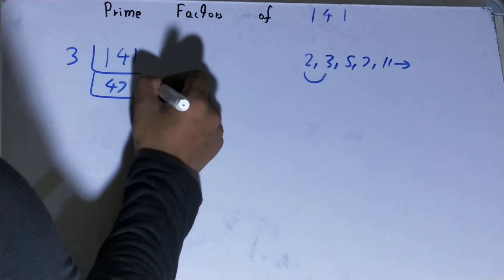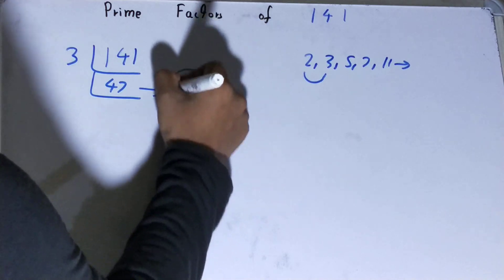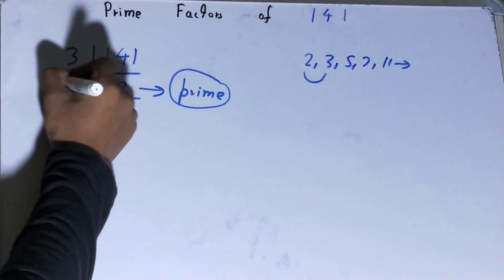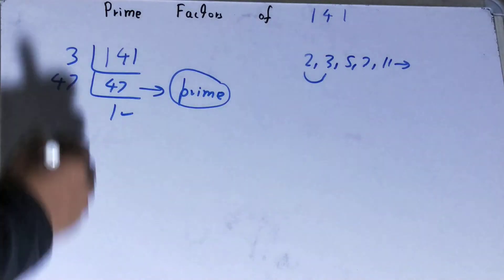Because of this, to divide 47, you need 47 on the left-hand side also. Once you have that, you'll be left with 1, and once you're left with 1, the work is done. Whatever you have on the left-hand side will be the set of prime factors for 141.